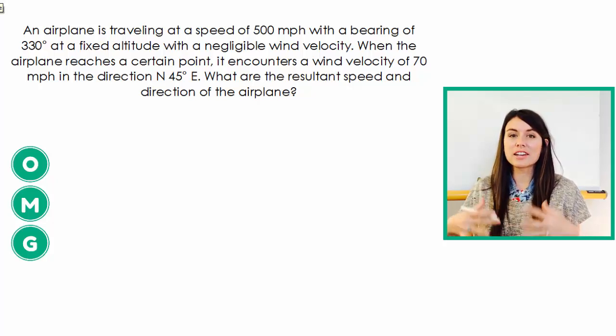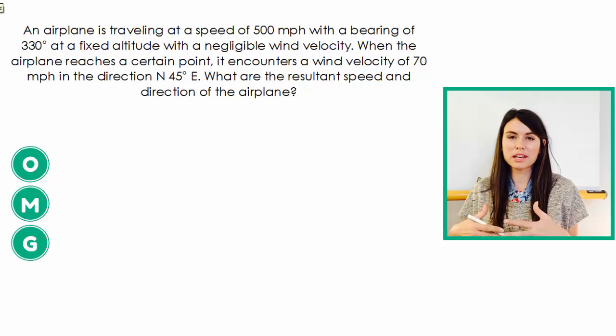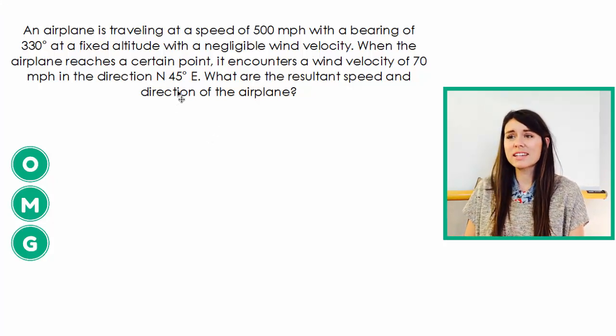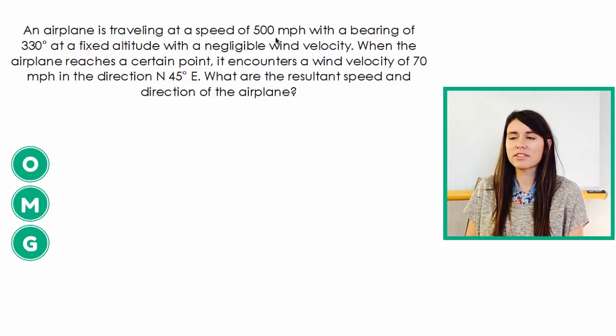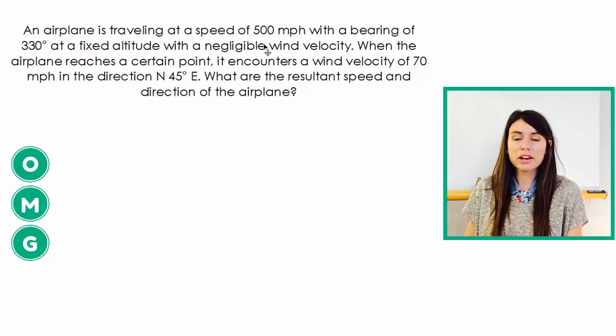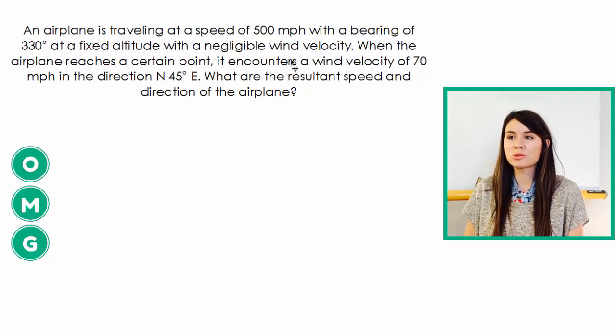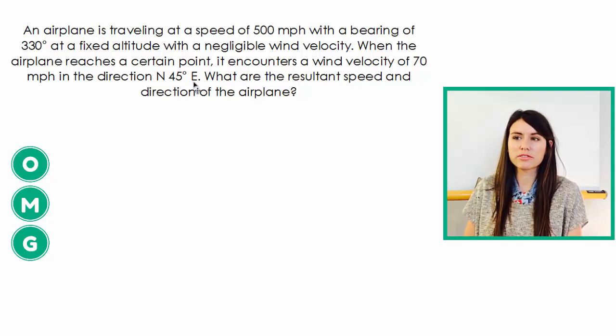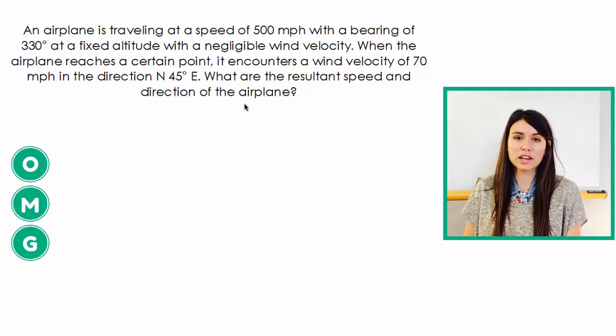It's great because it has several different types of application within one problem. So it says an airplane is traveling at a speed of 500 miles per hour with a bearing of 330 degrees at a fixed altitude with a negligible wind velocity. When the airplane reaches a certain point and encounters wind velocity of 70 miles per hour in the direction north 45 east, what is the resultant speed and direction of the airplane?